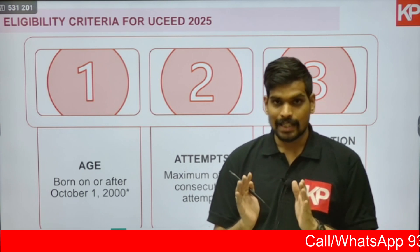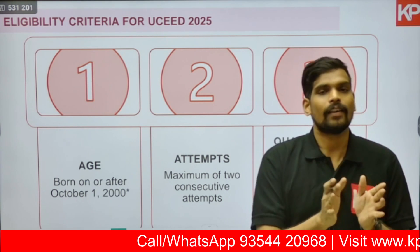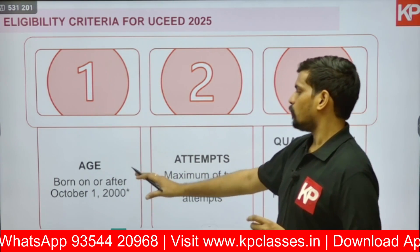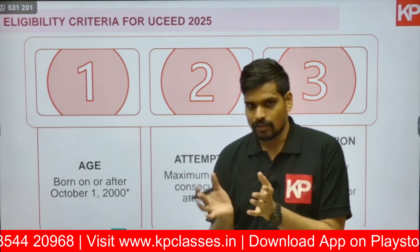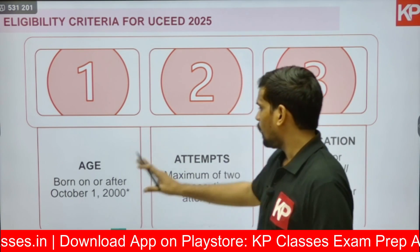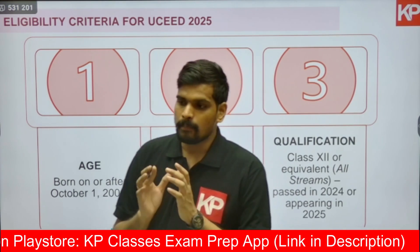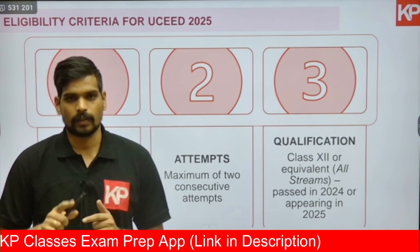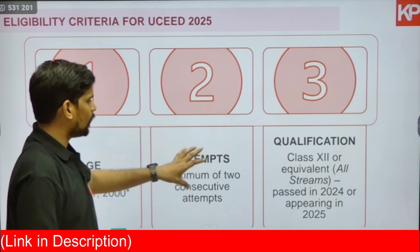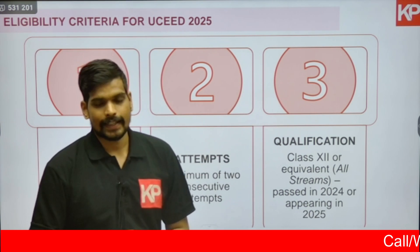Let us look into the eligibility criteria. There are three important criteria which you must all meet in order to apply for UCEED 2025. The first and most important is age: you should be born on or after October 1st, 2000 — approximately 24 years of age. There is an age relaxation of five years for SC and ST candidates. The second criteria is the number of attempts: you can have a maximum of only two attempts, and those two must be consecutive years, since UCEED is conducted once every year.